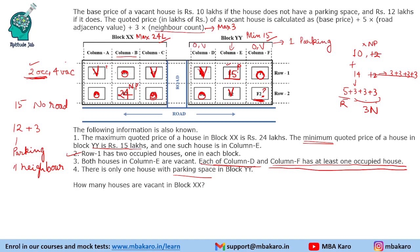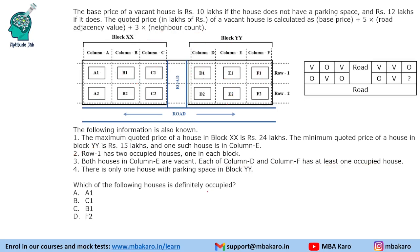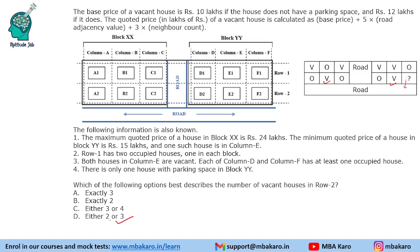Question 1: How many houses are vacant in block X? There are 3 vacant houses in block X: A1, C1, and B2... wait — A1, C1 are vacant in row 1, and the 24 lakh house B2 is vacant. So 3 houses are vacant in block X. Question 2: Which house is definitely occupied? A1 is vacant, C1 is vacant, B1 is occupied. So B1 is definitely occupied. Question 3: How many vacant houses are in row 2? E2 and B2 are definitely vacant. F2 may or may not be vacant, so it is either 2 or 3.